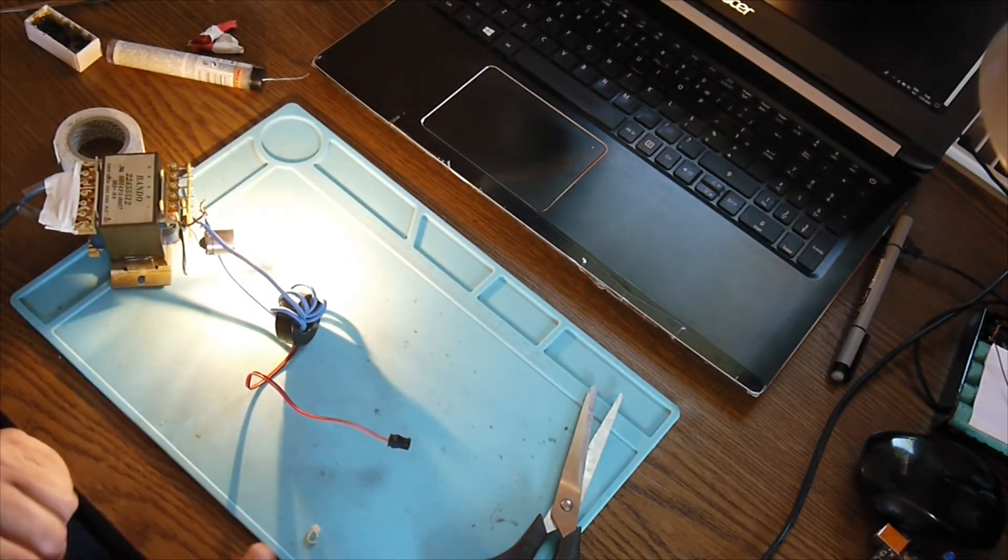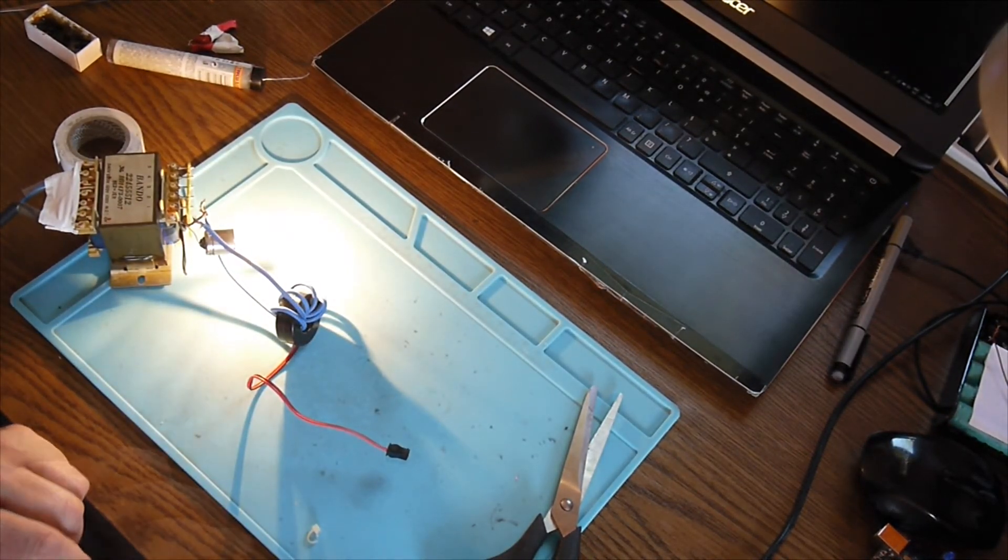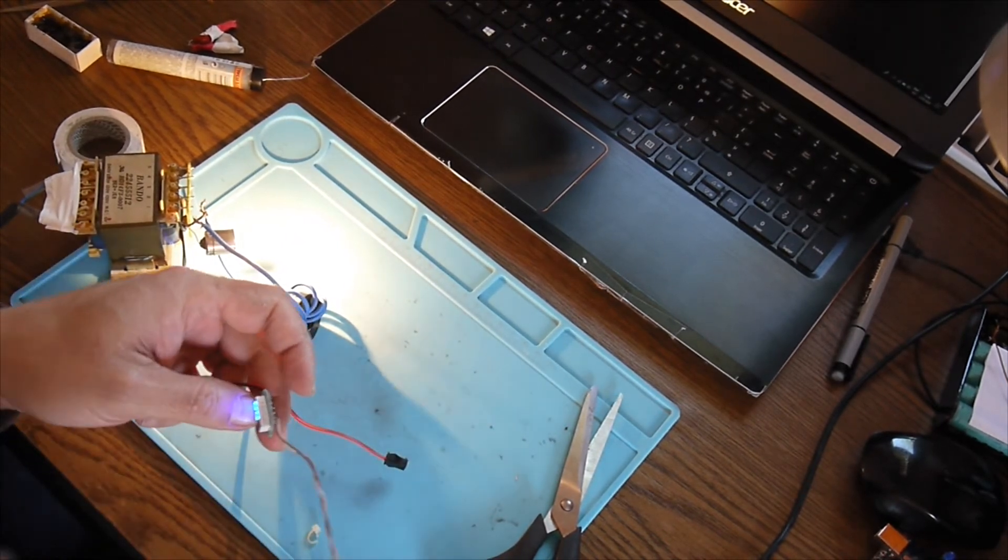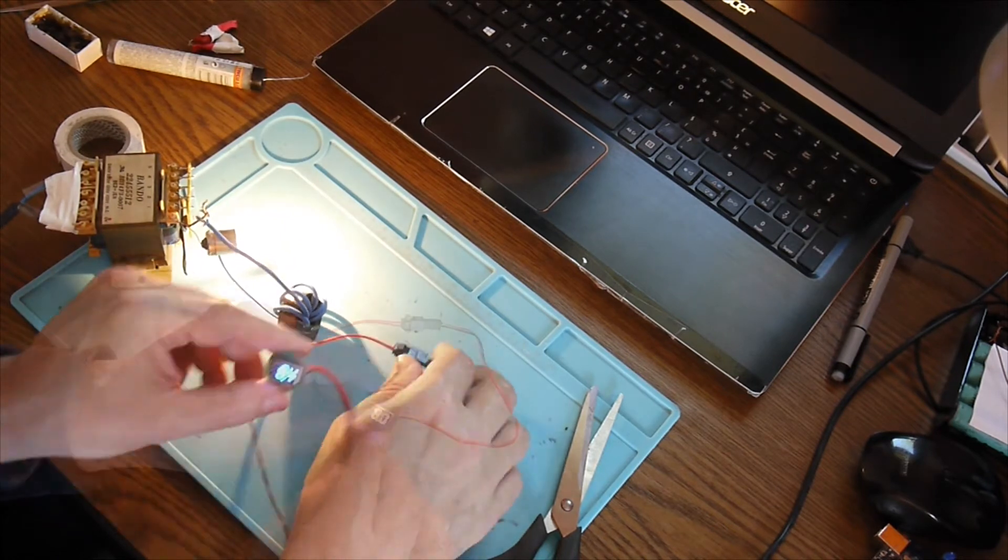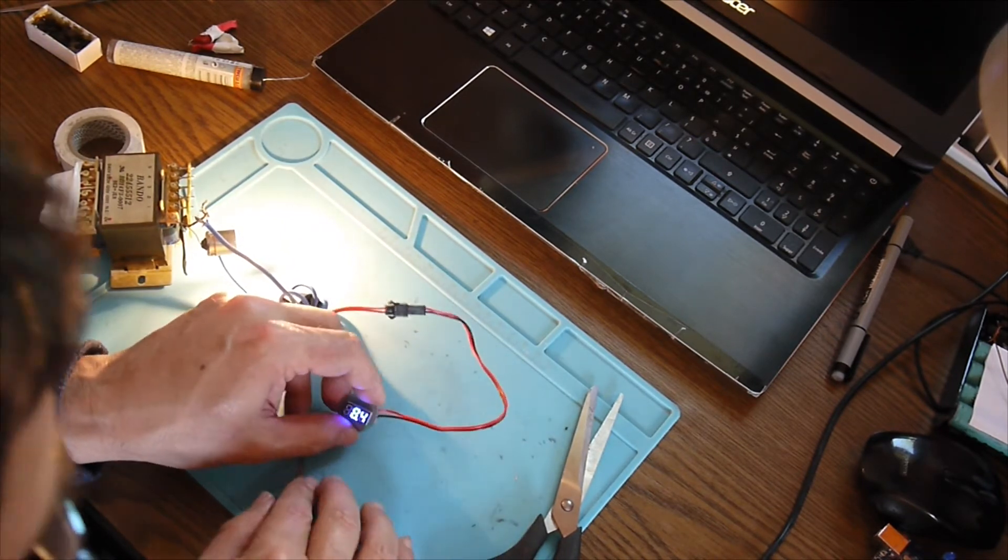And I will connect the bulb through the coil here. Perfect. Now let me see if we have any power from the coil. Here is the coil. Here is the meter.